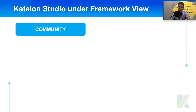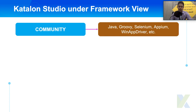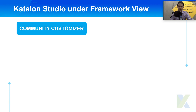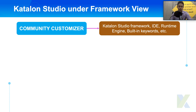Here is Catalon Studio under the framework view. For the community layer, in Catalon we chose Java and Groovy as the programming language. We have Selenium, Appium, and WinApp Driver as the core execution engine. With this programming language and execution engine, we have support from many people because the community we are based on is one of the biggest. Many people join our forum and deal with a lot of problems even when we are not available.